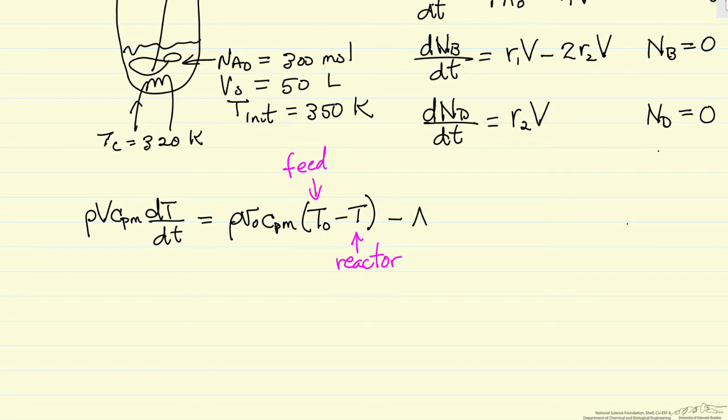And then we have two terms due to two reactions, so let me write them down. Heat of reaction for the first reaction, the rate of reaction times the volume. And so the question that comes up is, why is this a negative sign? And the explanation is that we can understand what's happening in the reactor.